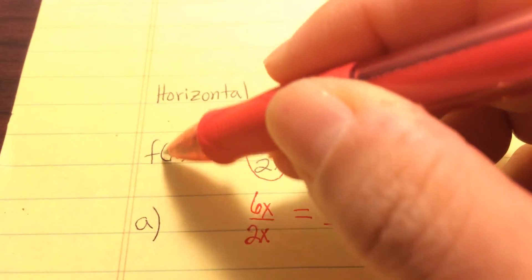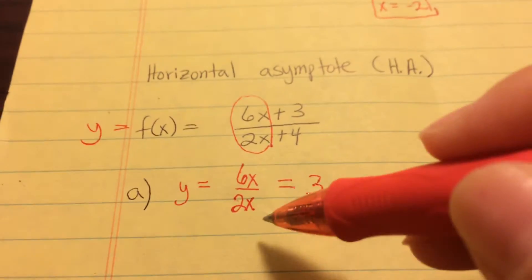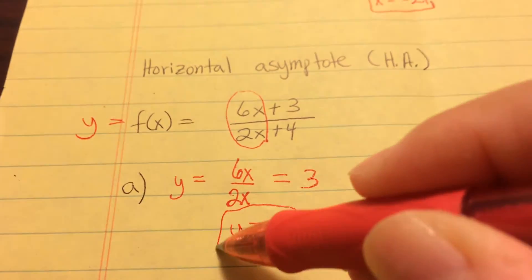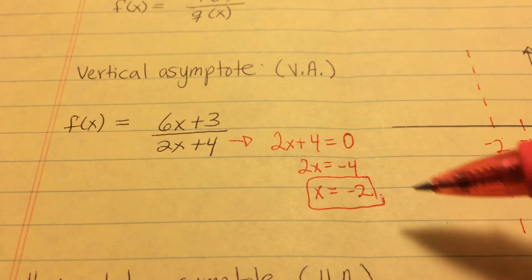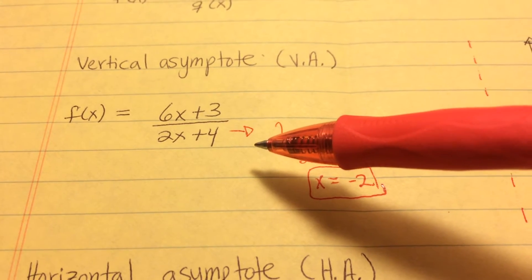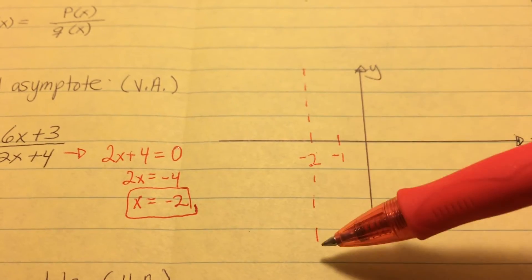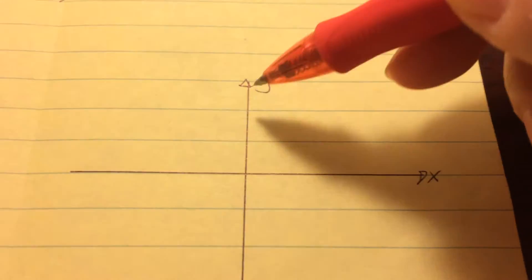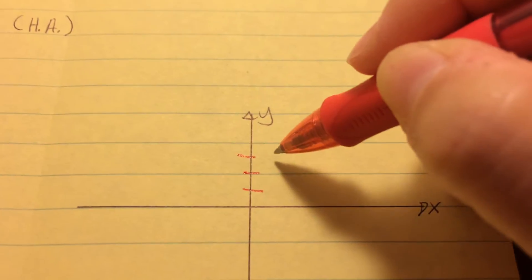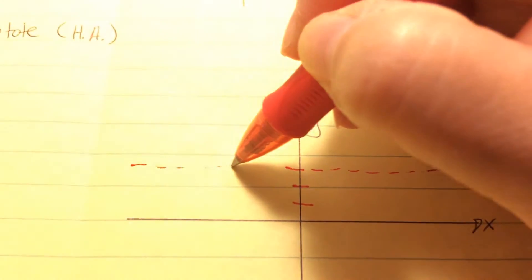Since f(x) is the same as y equals, our final answer is y equals 3 is a horizontal asymptote. Note that the vertical asymptote is always written as x equals something, because the denominator produces an x variable. For the horizontal asymptote y equals 3, we go to 3 on the y-axis and draw a horizontal dotted line. Make sure you label your x and y axis.